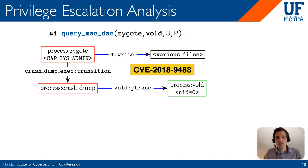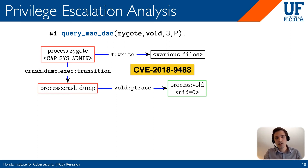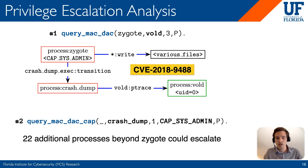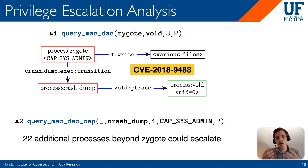Another thing we did with Big Mac is analyze a privilege escalation that allowed an attacker to compromise the vold process, enabling them to mount arbitrary files on the system and effectively compromise it completely, since vold is within the TCB of the Android system. The attacker was able to use Zygote as a starting node and use a vold ptrace edge to compromise vold by crashing itself and transitioning to the crash_dump label process. We used Big Mac to find this, and additionally used a second query to determine that not only was Zygote a good starting node, but there were 22 other starting nodes that could have been compromised for the same privilege escalation. Big Mac can find unintended edges between processes and triage existing vulnerabilities to help policy writers understand the true impact.